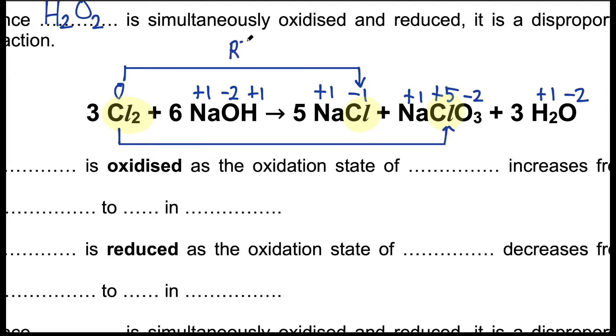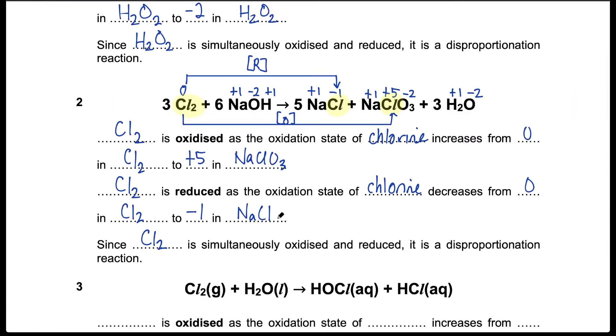So chlorine is simultaneously reduced and oxidized at the same time. So this is a disproportionation reaction. Chlorine also acts as both the oxidizing and reducing agent.